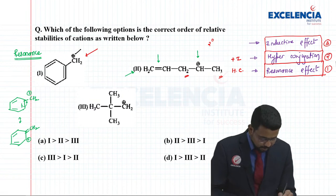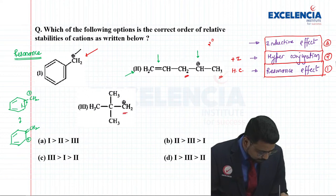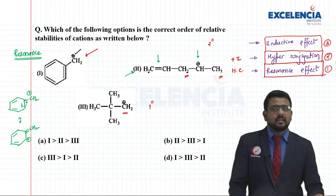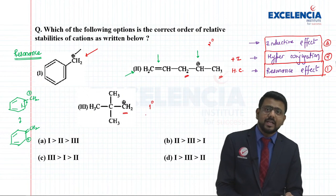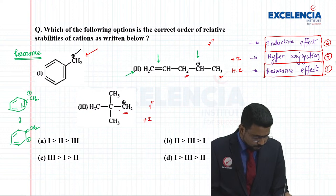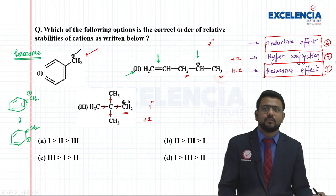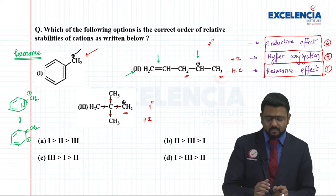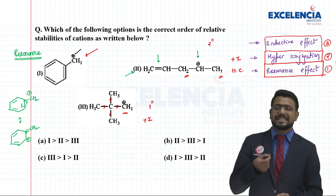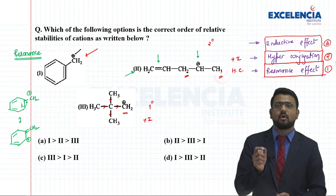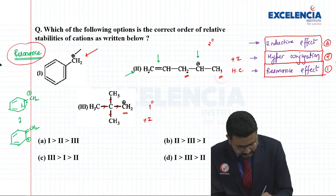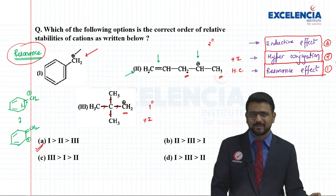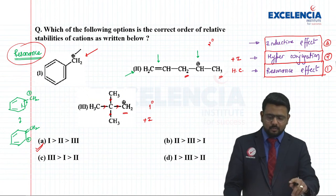The third carbocation is primary, so only the inductive effect from the alkyl groups comes into play. The second case has inductive effect and hyperconjugation; the first case has resonance. Since resonance-stabilized structure has the highest stability, option A is the correct answer: first carbocation is most stable, then second, then third.